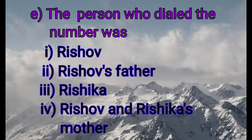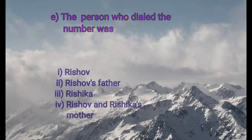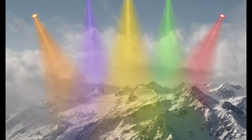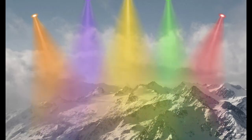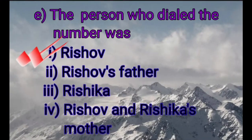Number E: the person who dialed the number was — option one: Rishabh, option two: Rishabh's father, option three: Rishika, option four: Rishabh and Rishika's mother. The correct option is number one: Rishabh.